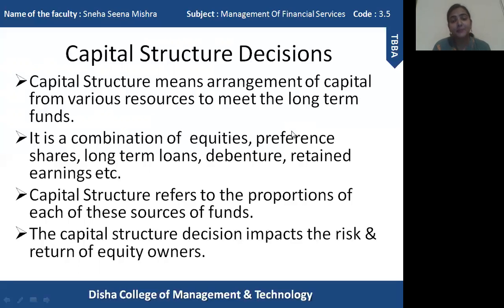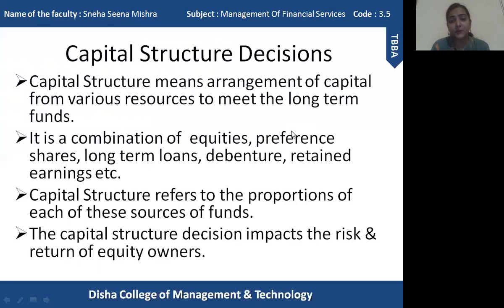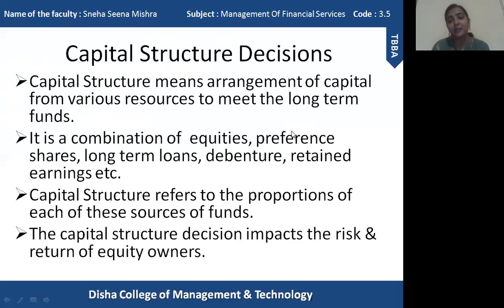Capital structure refers to the proportion of these finance sources — what percentage of capital will be raised from equity, preference shares, or debentures. That proportion needs to be decided; that is called the capital structure decision. For example, if an organization raises 20% of capital by issuing debentures, they must decide the debt-equity ratio — how much to raise through equity and how much through debentures or loans.